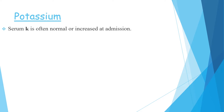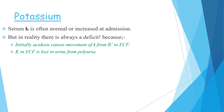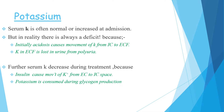Potassium is an important issue in DKA. Serum potassium is often normal or increased at admission, but in reality there is always a deficit. Initially, acidosis causes movement of potassium from intracellular to extracellular fluid, and potassium in extracellular fluid is lost in urine from polyuria. Further, serum potassium decreases during treatment because insulin causes movement of potassium from extracellular to intracellular space, and potassium is consumed during glycogen production. So in reality, potassium is depleted even though serum levels appear normal or elevated.